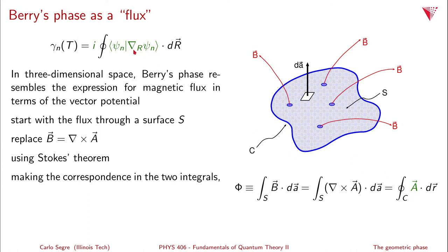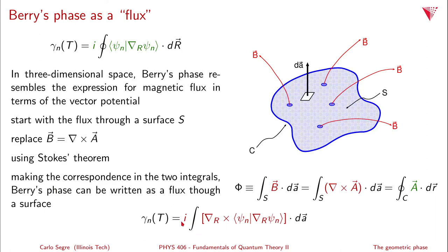Making the correspondence between Berry's phase and magnetic flux, A · dR can be replaced by ∇ × A. So the geometric phase at time T equals i times the integral of the curl over n-dimensional r-space of the inner product ⟨ψₙ | ∇_r ψₙ⟩ dotted into the surface area element, integrated throughout the surface.